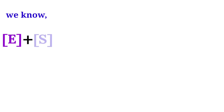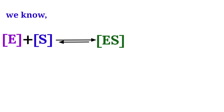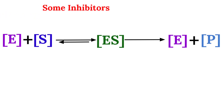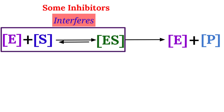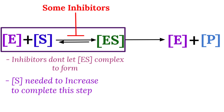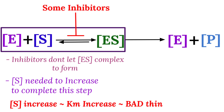Enzyme in association with substrate results in formation of an enzyme-substrate complex, and this complex gives rise to enzyme and product in separate form. Some inhibitors interfere with this step — they do not allow the substrate to interact with the enzyme, interfering in enzyme-substrate complex formation. This means the substrate concentration requirement increases to form the complex, which means the Km value increases, which is a bad thing for any enzyme.